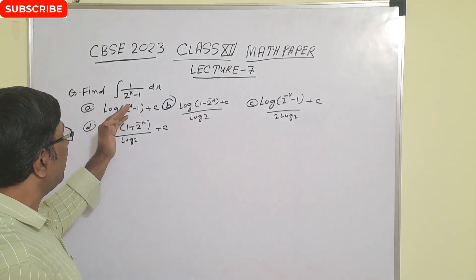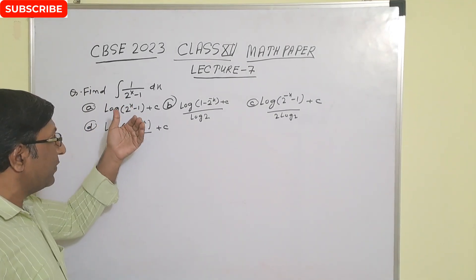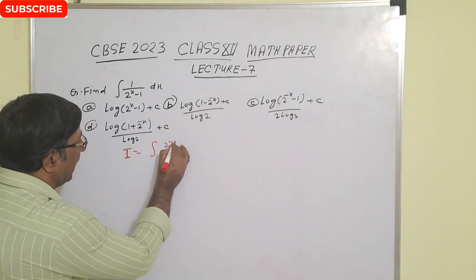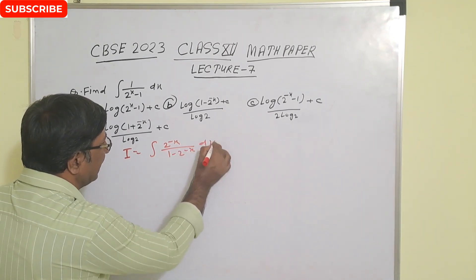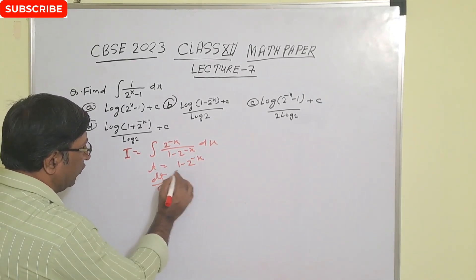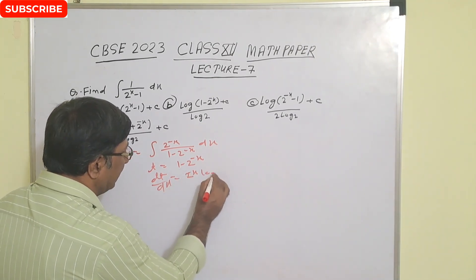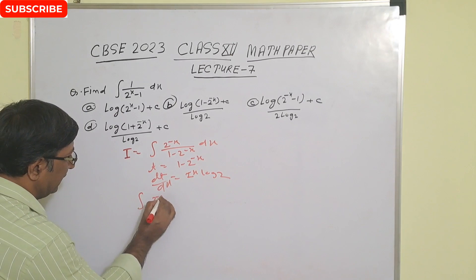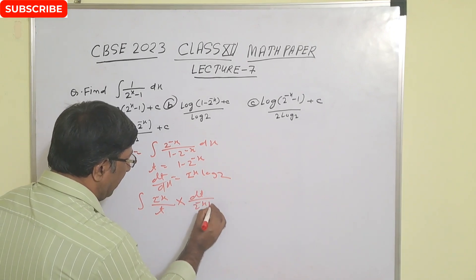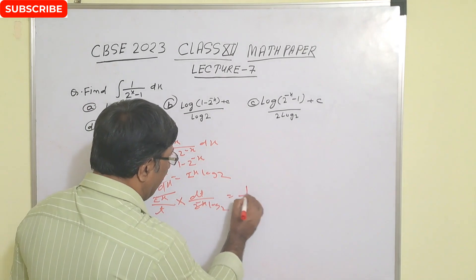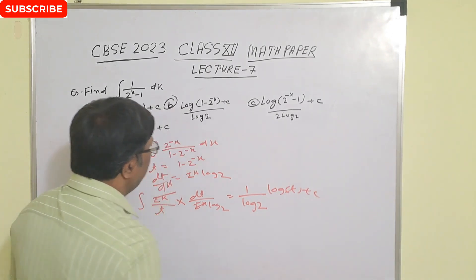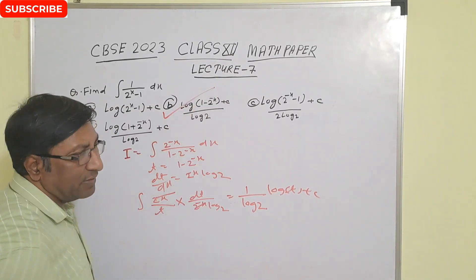Next question: integration of 1/(2^x - 1) dx. Divide numerator and denominator by 2^x, giving ∫ 2^(−x) / (1 − 2^(−x)) dx. Substitute t = 1 − 2^(−x), so dt/dx = 2^(−x) ln 2. The integral becomes (1/ln 2) ∫ dt/t = (1/ln 2) ln|t| + C. Substituting back, t = 1 − 2^(−x). So the correct answer is option B.